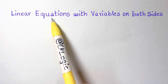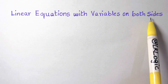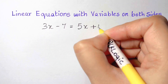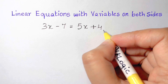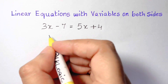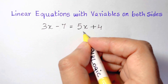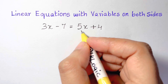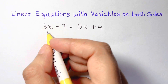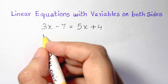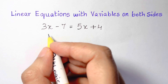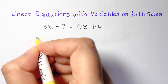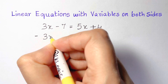How to solve linear equations with variables on both sides. If I have an equation like 3x minus 7 equals 5x plus 4, the first thing you want to do is get your variables on one side. To avoid negatives, get rid of the smaller coefficient — I have 3 and 5, so I'm going to get rid of the 3x because it's positive.